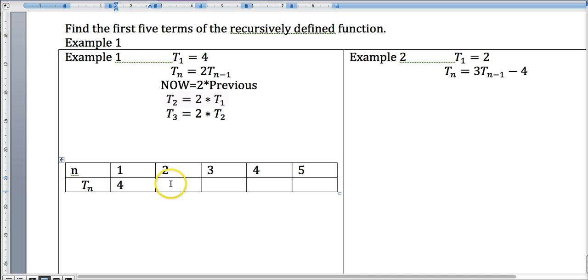Now to get the second term, which this one right here would be t sub two. T sub two is equal to two times t sub one. Well that's just two times four. So this right here is simply going to be an eight.